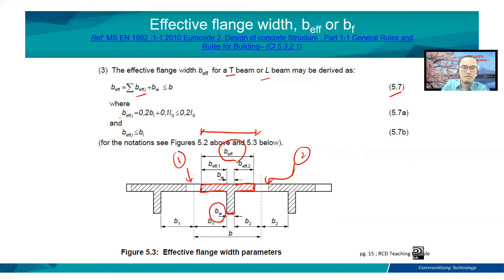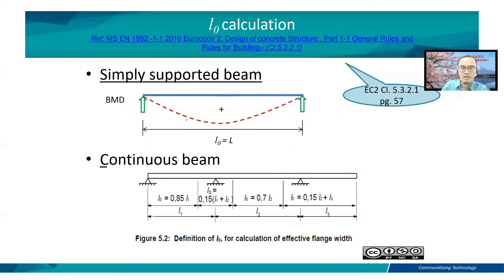This is how to get the effective flange width from slab number 1 and slab number 2. For a simply supported beam, the zero moment occurs at the support, so L_0 is equal to L. For a continuous beam, we refer to Figure 5.2, where the positions of the zero moment are located at specific points along the span.